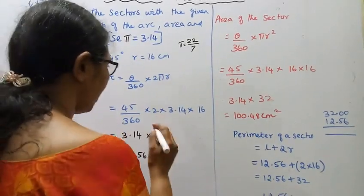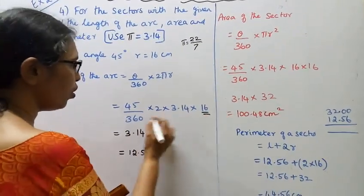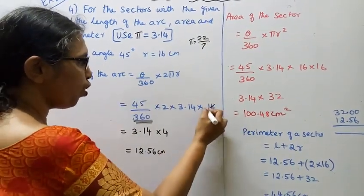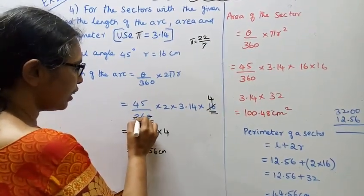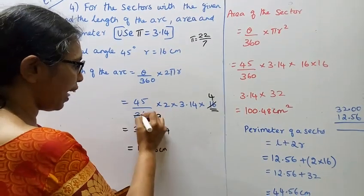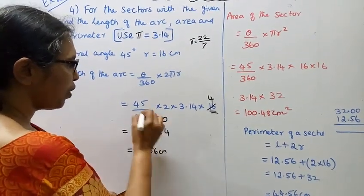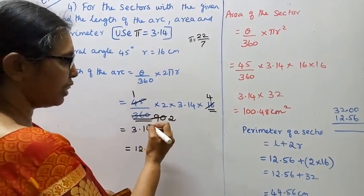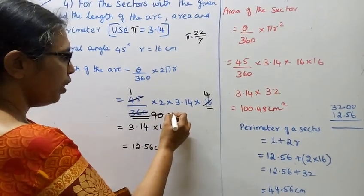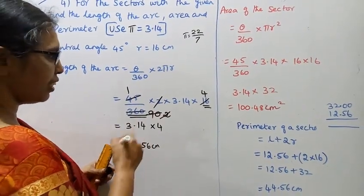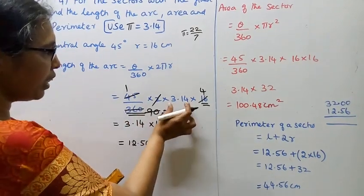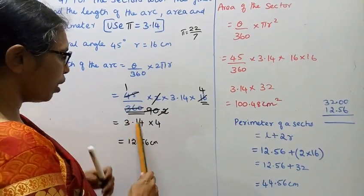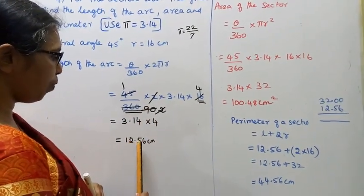Now cancel: 16 and 360 — cancel up and down. 4 fours are 16, 4 nines are 36. Then 45 ones are 45, 45 twos are 90. Cancel the 2. We get 3.14 into 4. Multiply: 3.14 into 4 equals 12.56.